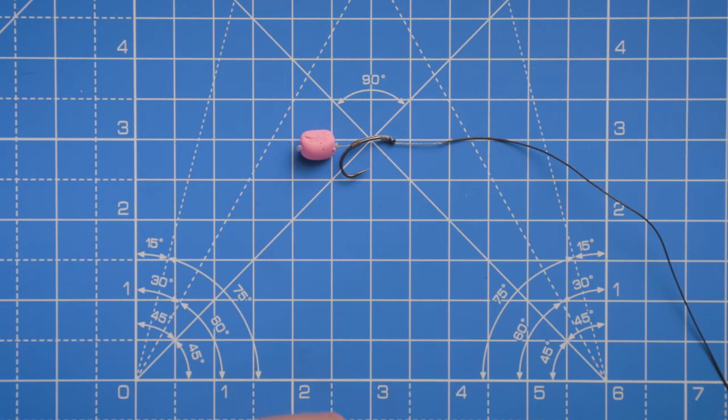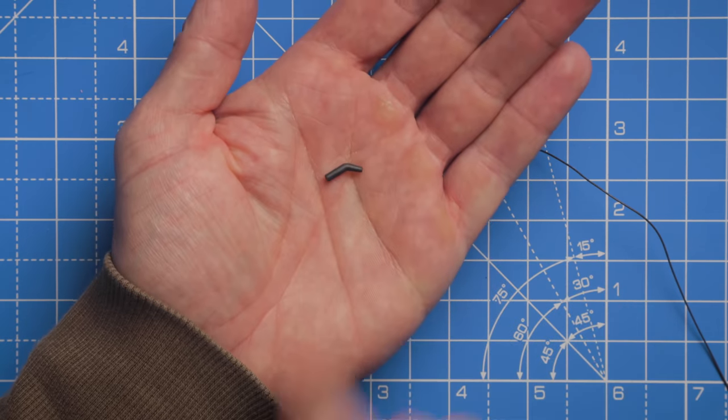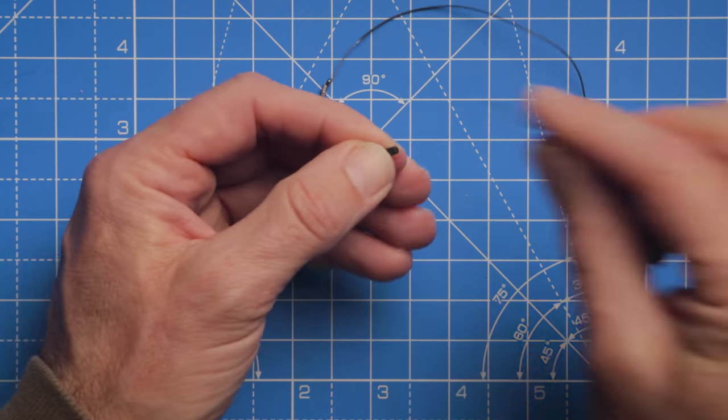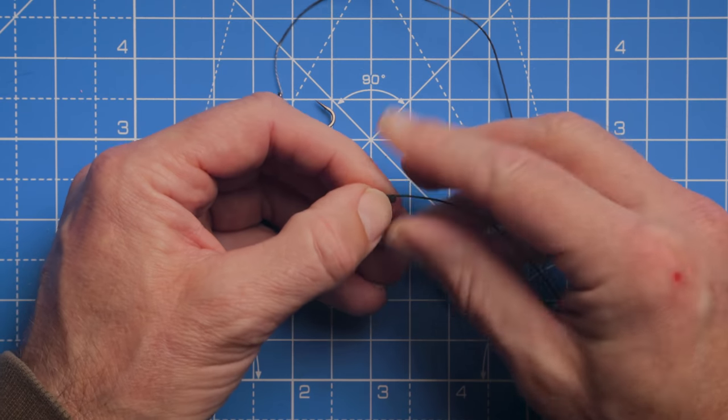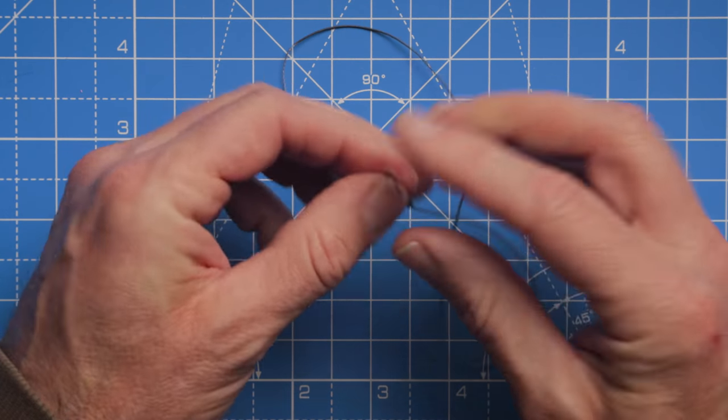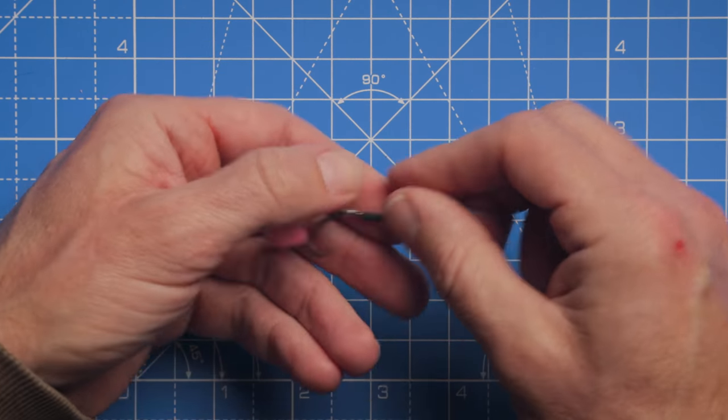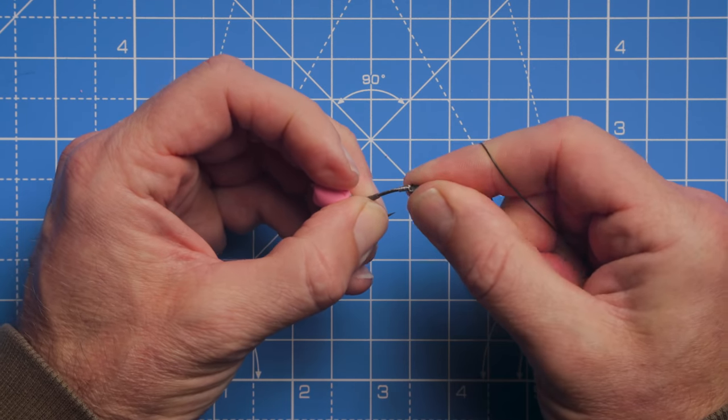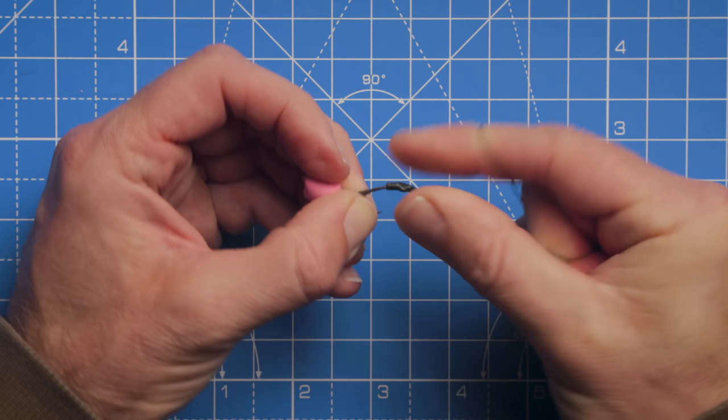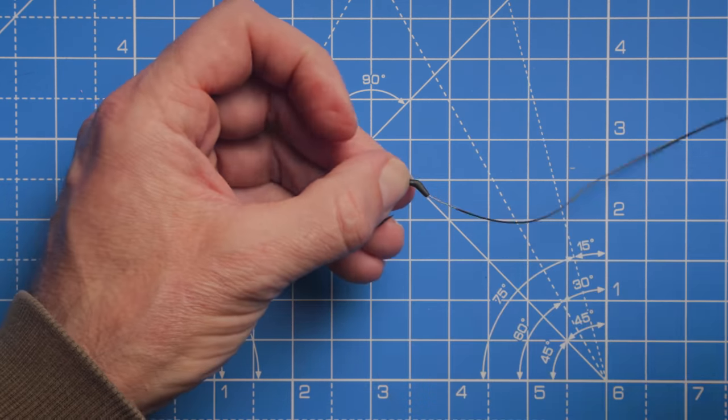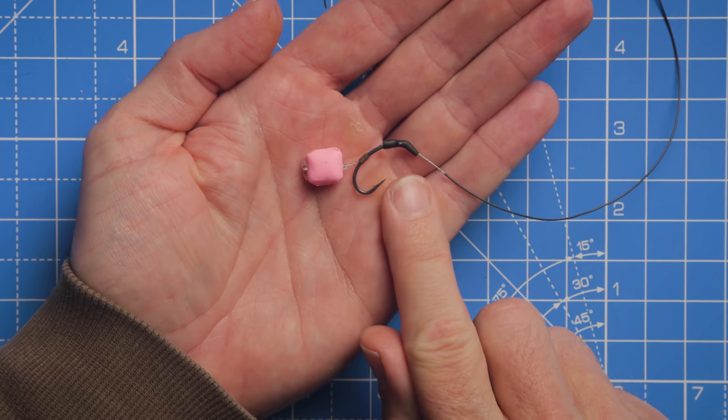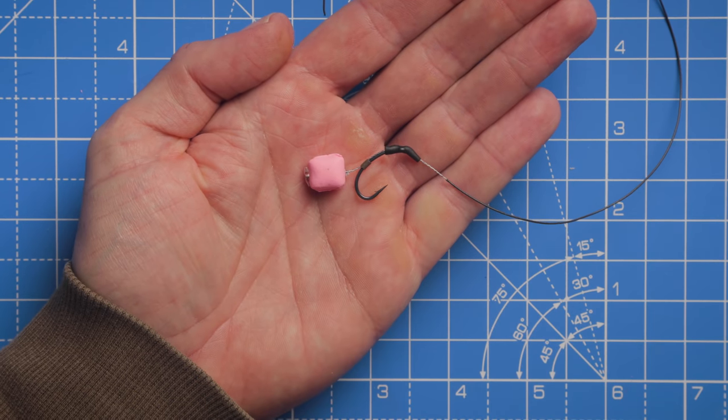Now I'll take the kicker - really handy these pre-made kickers, this is a size medium. Just run that down the hook link, and with a size six hook that should just go over the eye really easily. It's still nice and snug into position, and that's really going to help our hook turn over in the fish's mouth.